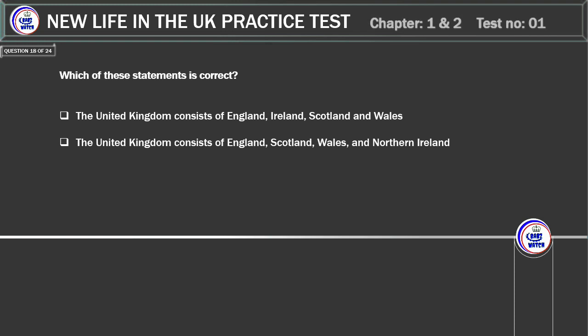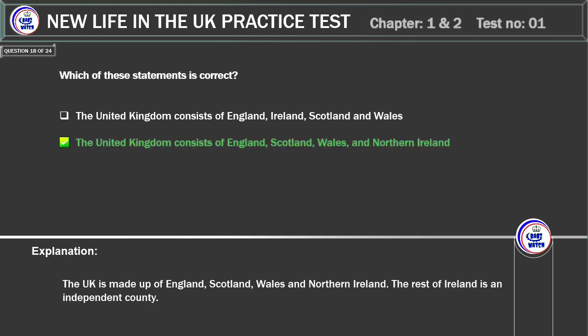Which of these statements is correct? The United Kingdom consists of England, Ireland, Scotland and Wales. Or: the United Kingdom consists of England, Scotland, Wales and Northern Ireland. Correct answer: England, Scotland, Wales and Northern Ireland. Explanation: the UK is made up of England, Scotland, Wales and Northern Ireland.